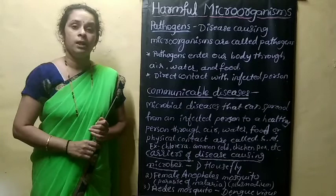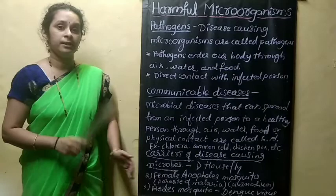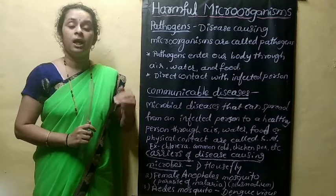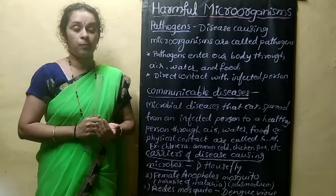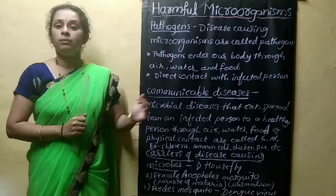The protozoa Plasmodium vivax is found in the female Anopheles mosquito. When it bites, the protozoa is transmitted to a healthy person, causing malaria. It is important to note that the Anopheles mosquito is the carrier, but Plasmodium vivax is the actual cause of malaria.